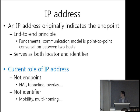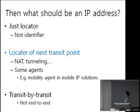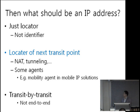However, the current role of the IP address is not always indicating endpoint. For instance, with NAT, tunnels, and overlays, it cannot serve as a locator for the true endpoint. Also, it cannot serve as an identifier — for instance, in the cases of mobility and multi-homing. So then what should an IP address be? Just a locator. We should relieve the IP address of its burden.